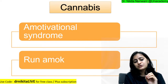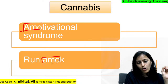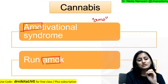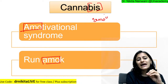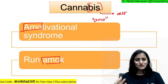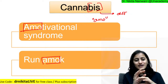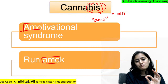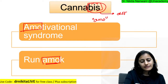Next: cannabis. You see amotivational syndrome and run amok — remember 'amo' and 'amok' go hand in hand. To remember this, think: 'cannabis ki bas karo' — I am not motivated to do anything more. 'Canna-bus' — bus is amotivational. Run amok means a person going wild, running to attack people. Amotivational syndrome and run amok are the key features of cannabis.